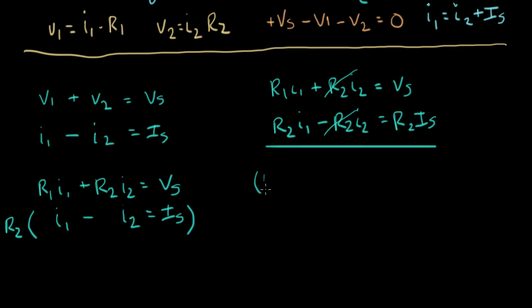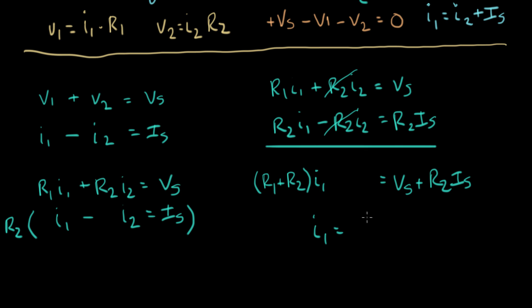After cancellation, we get (R1 plus R2) times I1 equals Vs plus R2·Is. This gives the symbolic solution: I1 equals (Vs plus R2·Is) divided by (R1 plus R2). Now I want to put in the original real values and solve this circuit all the way through.